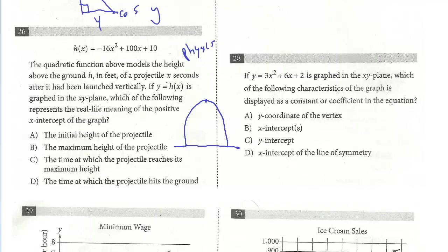So the question is just saying, what in the real-life application of this problem does the x-intercept? You should see that's when the projectile is on the ground, right? So it's not the initial height. It's not the maximum height. That would be the vertex. The time at which it reaches the maximum height? No. The time at which it hits the ground, these two points. So the answer here is D.